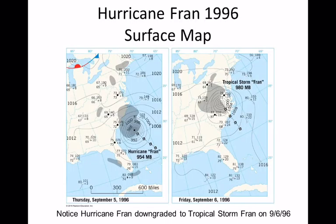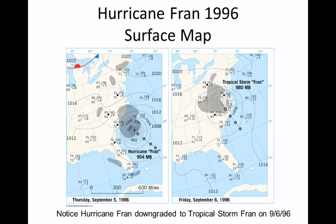Here is Hurricane Fran in 1996, shown from day one to day two — Thursday and Friday. One key thing hurricanes need to survive is warm ocean water. By day two you can see the winds are weaker. You can tell because the pressure gradient — the isobars — are more spread apart, indicating the storm weakened as it moved.